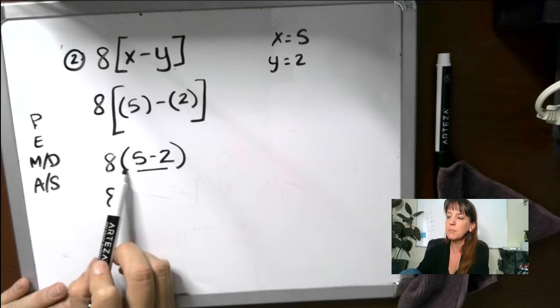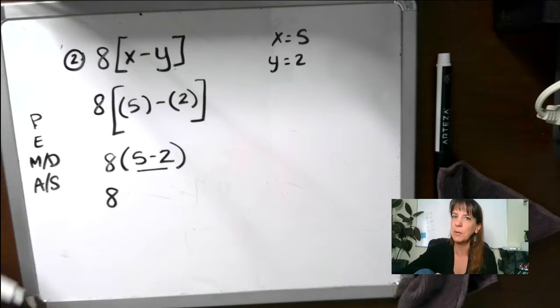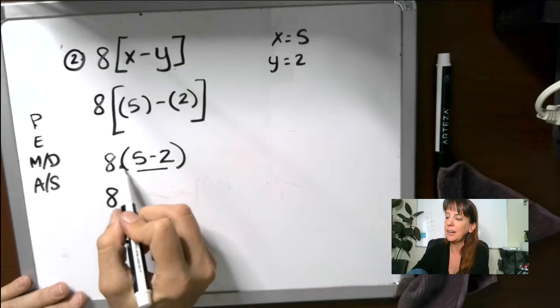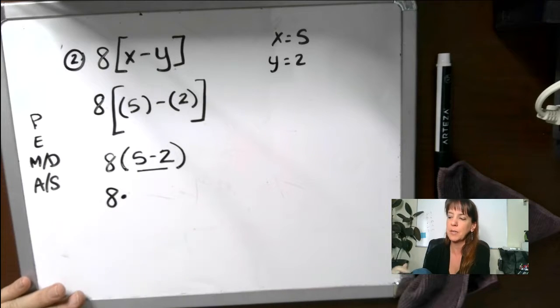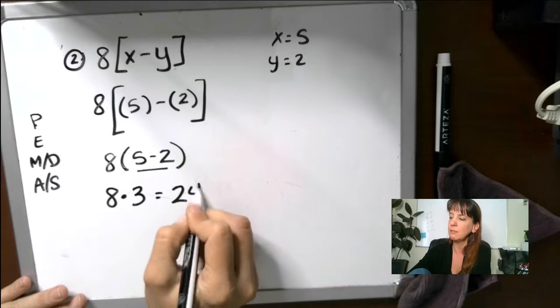8. And the operation that comes in between here, again, mathematicians are lazy. So if you don't see it, it's probably multiplication. So the operation that comes in there, multiplication, 5 minus 2 is 3. And then we get that, we get 24.